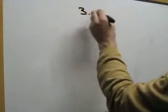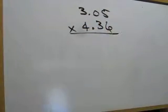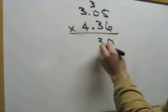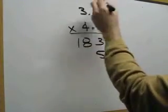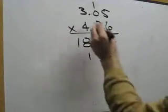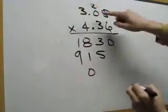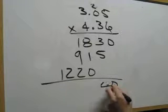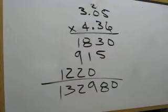Let's try one or two more. Let's try 3.05 and let's multiply that times 4.36. As far as multiplying this, we get 30, carry the 3, 0 times 6 is 0 plus 3, 3 times 6 is 18. 5 times 3 is 15. Carry the 1, 0 times 3 is 0 plus 1 is 1, 3 times 3 is 9. 5 times 4 is 20, carry the 2. 0 times 4 is 0 plus 2 is 2, 3 times 4 is 12. Add up this whole mess and we get 1, 3, 2, 9, 8, 0.